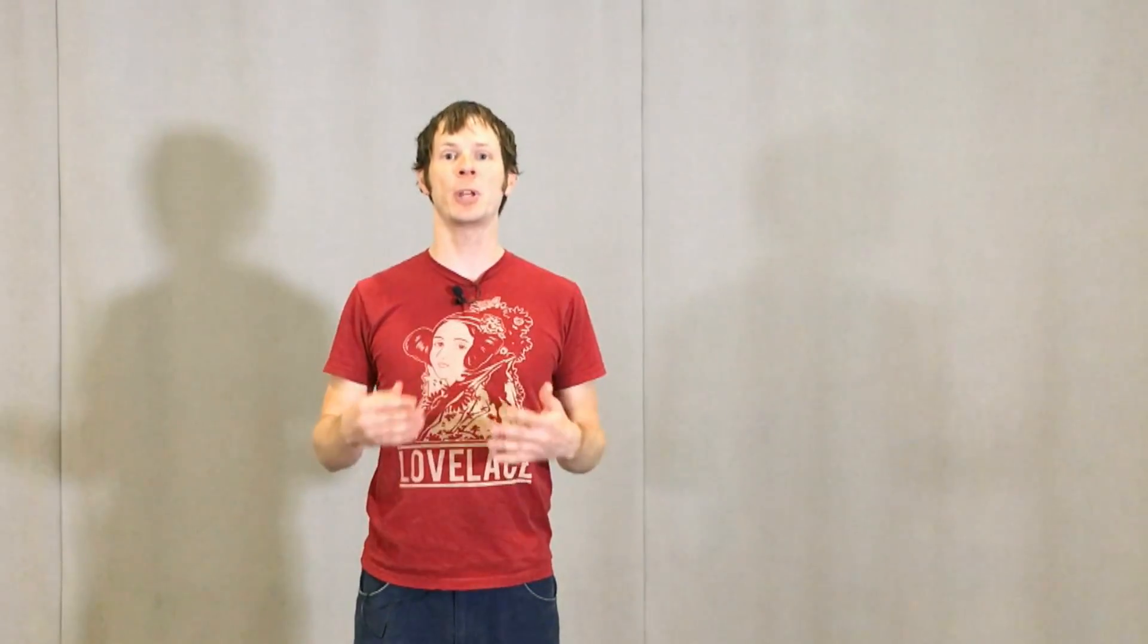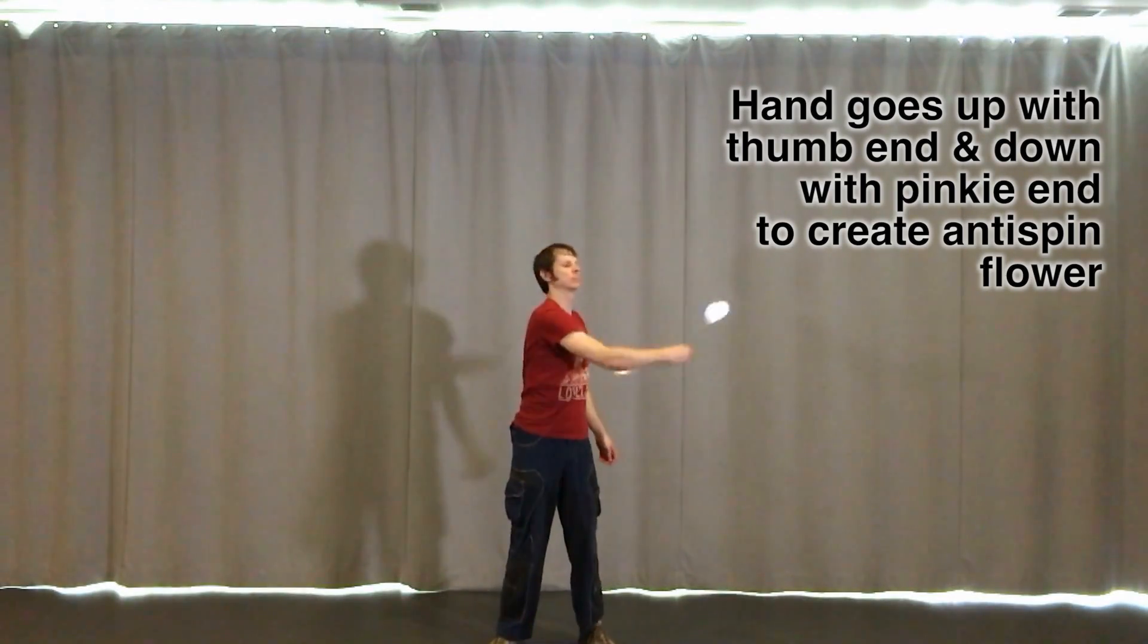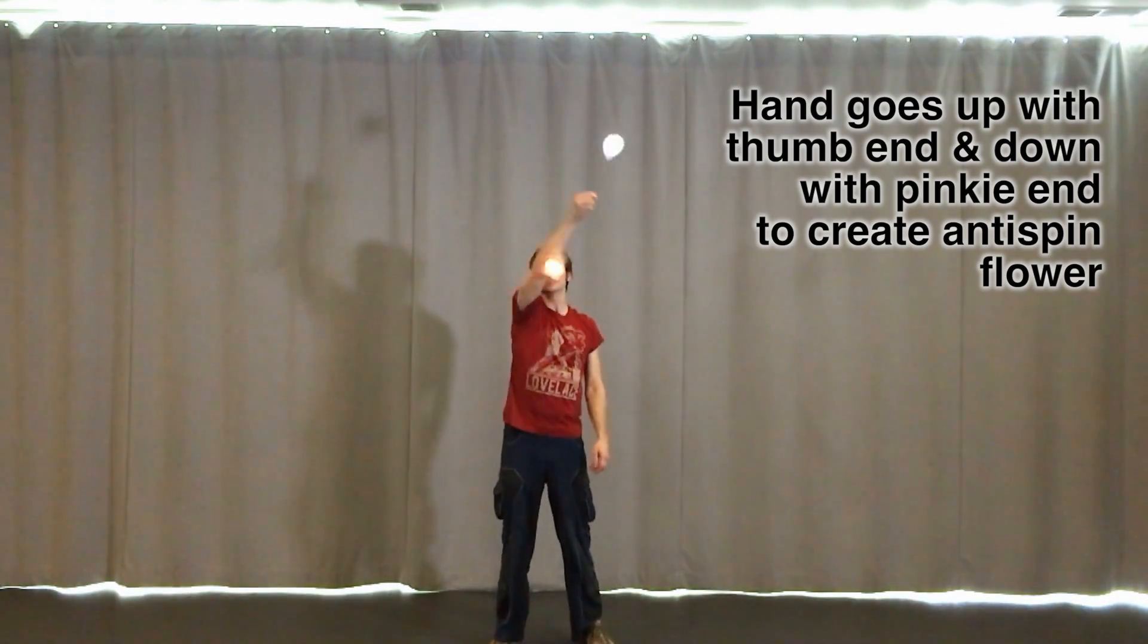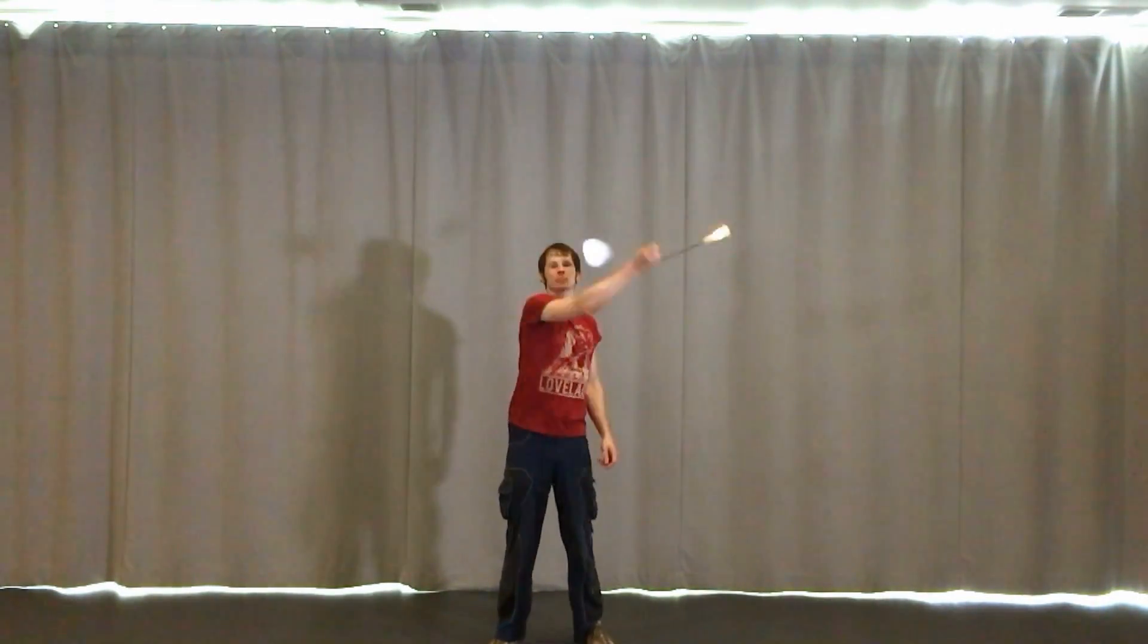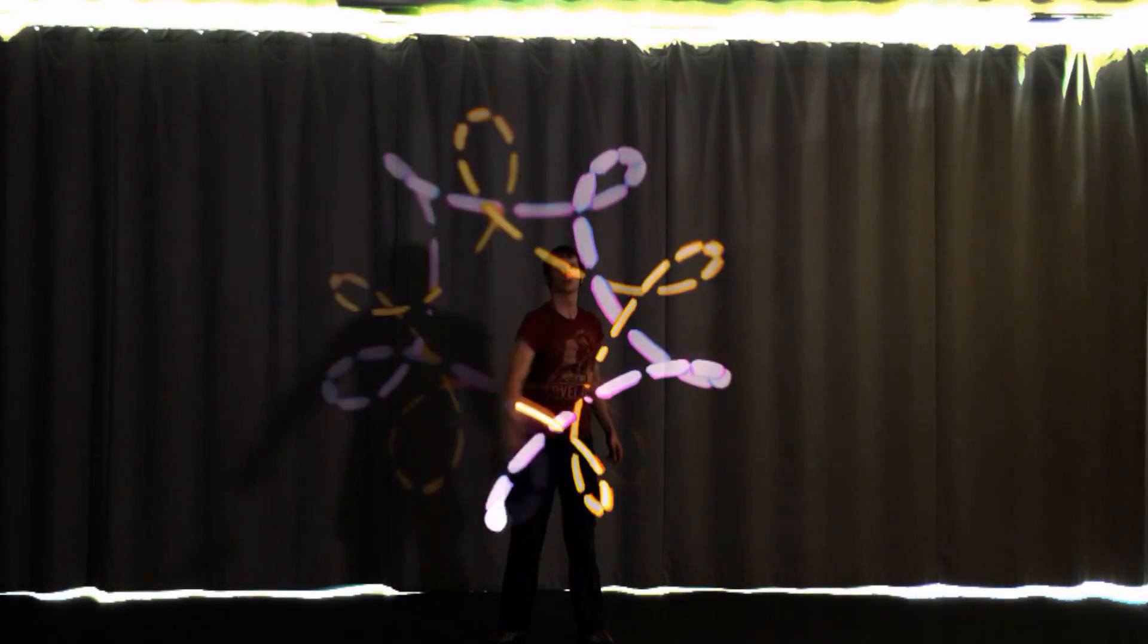We usually call turns back and forth between forward and reverse weaves waist wraps, but the cool thing about doing it with a meteor or gunslinger is that it's also a flattened flower. Remember those points where we either pop the thumb end up the centerline or drop the pinky end down the centerline? Well, pop your hand up with the thumb end and drop it down with the pinky end as you go back and forth. This will result in a ten petal flower with the thumb end and the pinky end each producing their own five petal anti-spin flower.